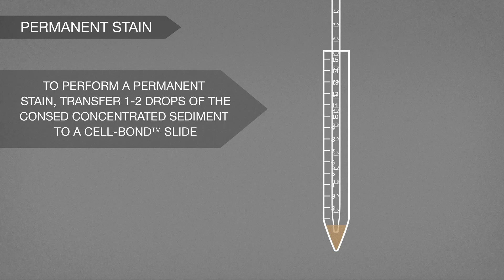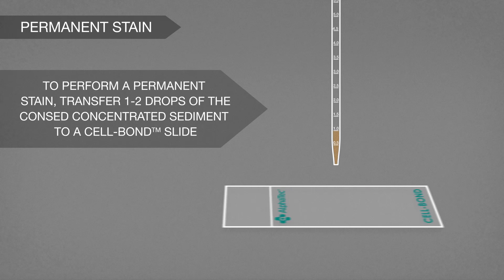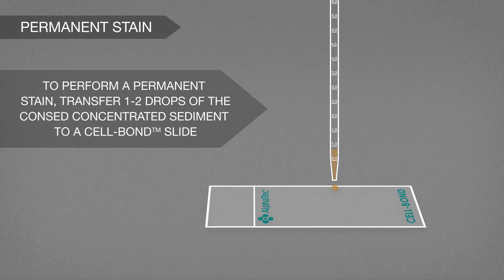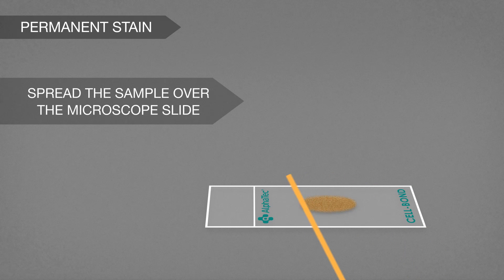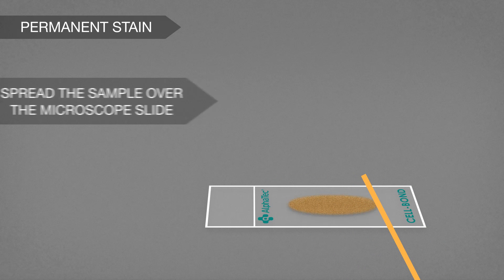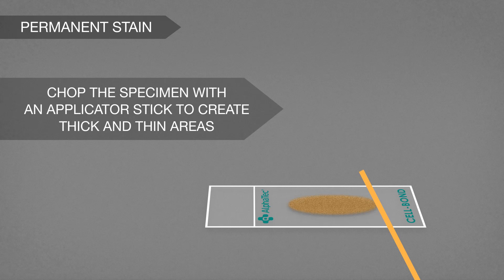To perform a permanent stain, transfer one to two drops of the CONSED concentrated sediment to a cell bond slide. Spread the sample over the microscope slide. Using an applicator stick, chop the specimen, spreading it out. This will create thick and thin areas.